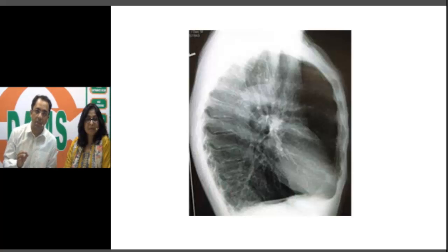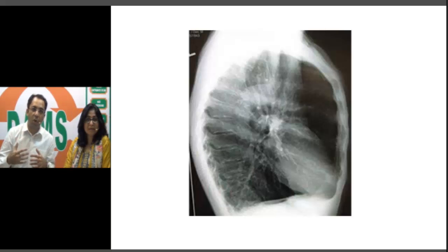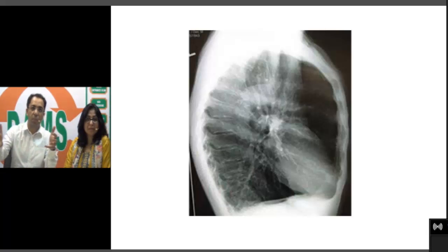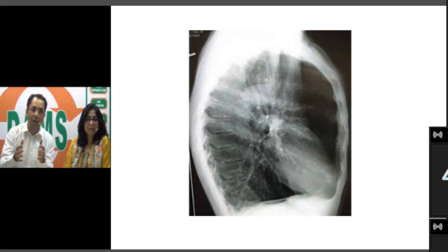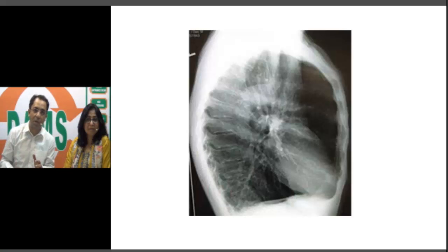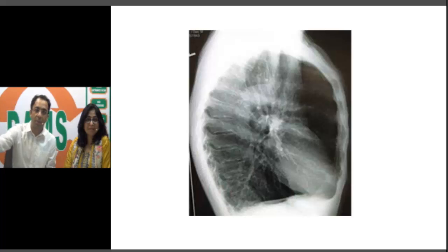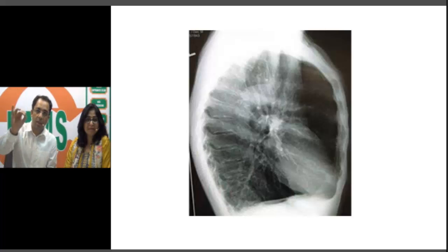Let us look at the X-ray. This is a chest X-ray lateral view. The striking feature is the barrel-shaped chest — look at how the AP diameter of the chest is expanded. This is barrel-shaped chest with increased AP diameter. Second, look at the diaphragm — it is completely flat. Normally the diaphragm curves upward, but here it is flattened. Third, notice the retrosternal space.